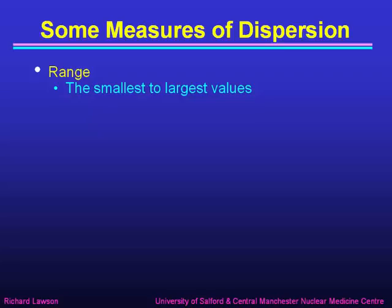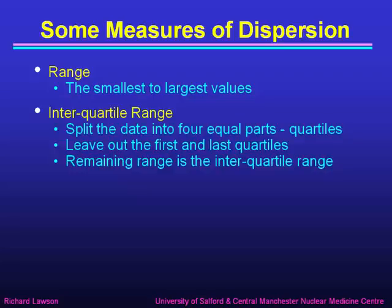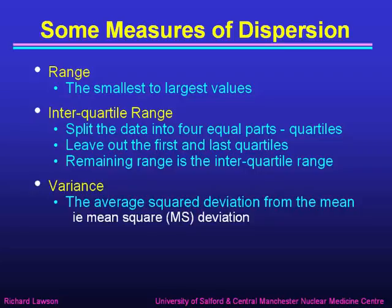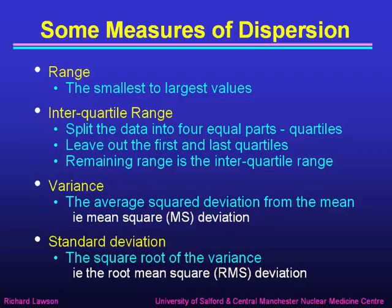There are several numbers we could use to measure dispersion. The most obvious is the range, which goes from the smallest to the largest values. There's also the interquartile range, where we split the data into four equal parts called quartiles and leave out the first and the last quartile. More important is the variance, the average squared deviation from the mean — in other words, the mean square, or MS, deviation. Related to that is the standard deviation, which is the square root of the variance, sometimes called the root mean square, or RMS, deviation. Variance and standard deviation are the most important measures of dispersion.